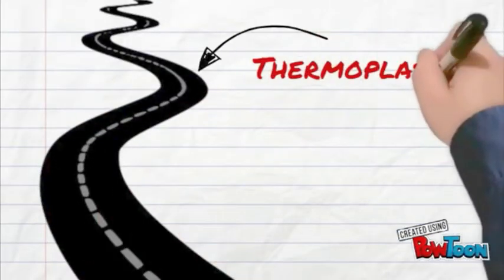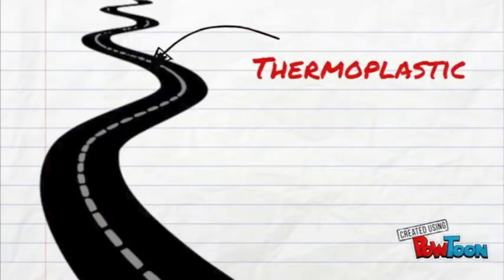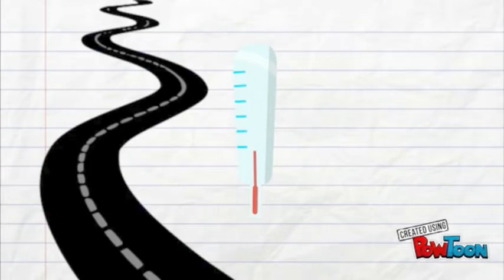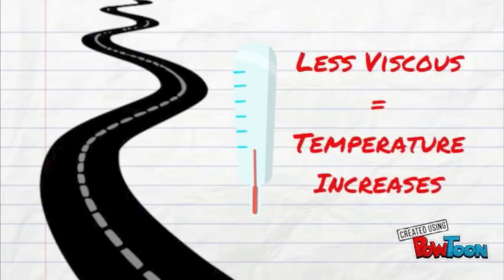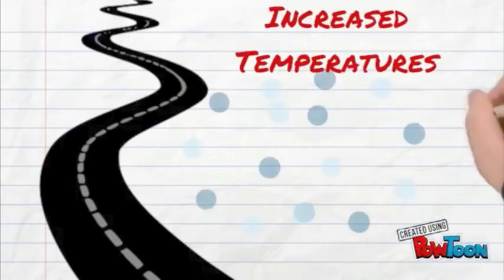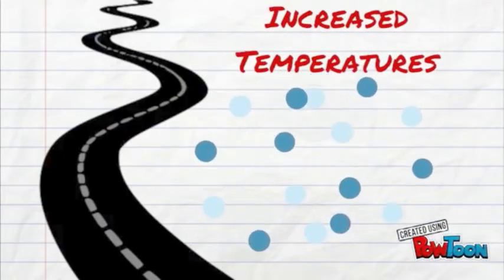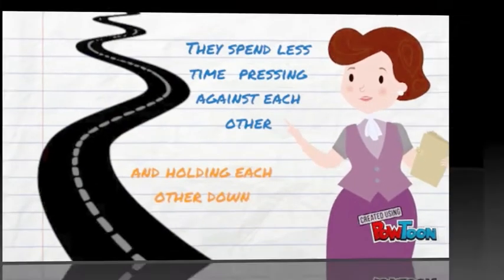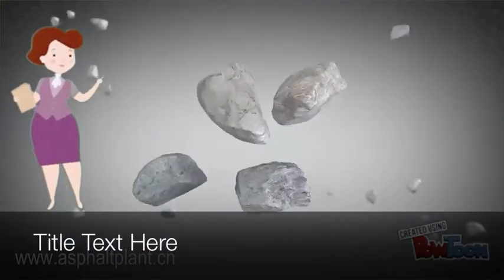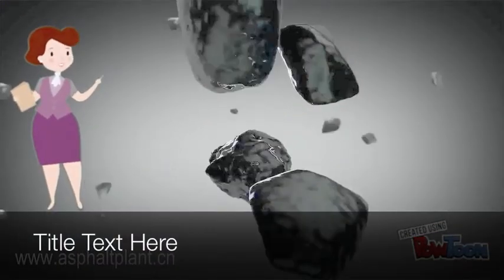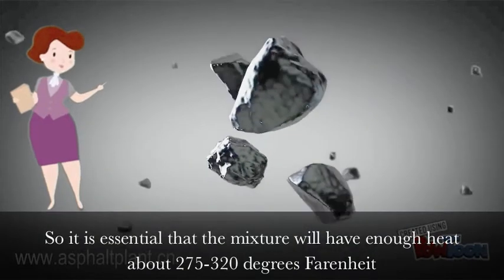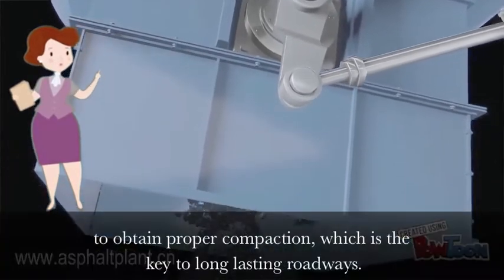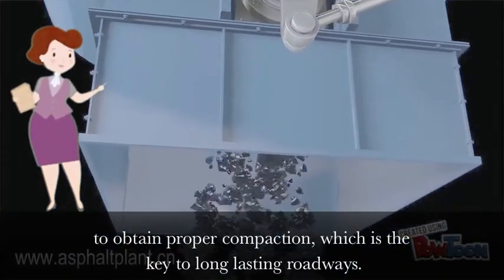All binders, like asphalt, are thermoplastic — that is, they become harder or more viscous as their temperature decreases, and softer or less viscous as their temperature increases. The increased temperature causes the molecules to move faster, which means they spend less time pressing against each other and holding each other down. As the temperature drops, the asphalt mix stiffens, making it harder to compact, so it is essential that the mixture will have enough heat — about 275 to 320 degrees Fahrenheit — to obtain proper compaction, which is the key to long-lasting roadways.